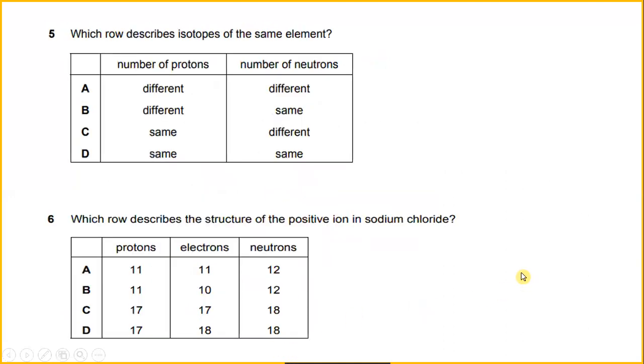Which row describes isotopes of the same element? Isotopes are members of a family of an element that have the same number of protons but different number of neutrons. So the answer will be C.